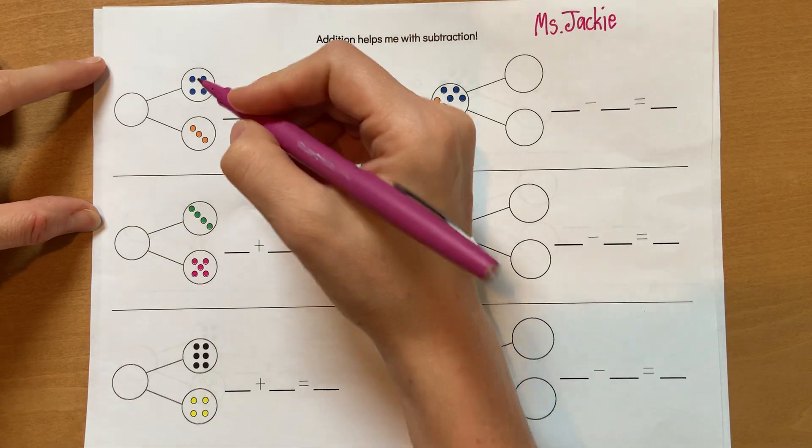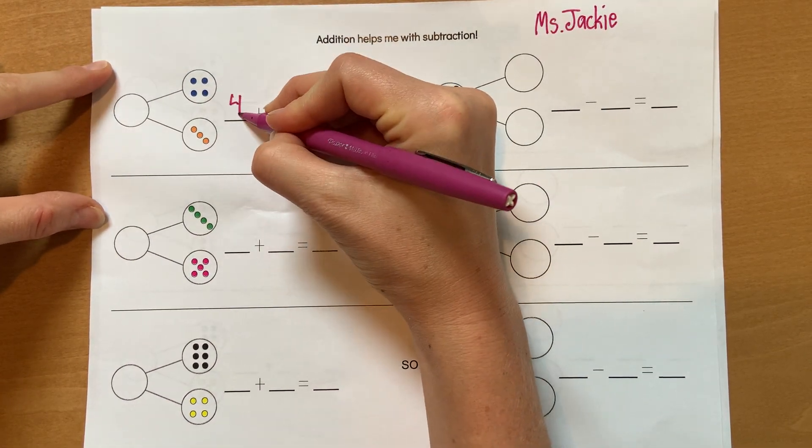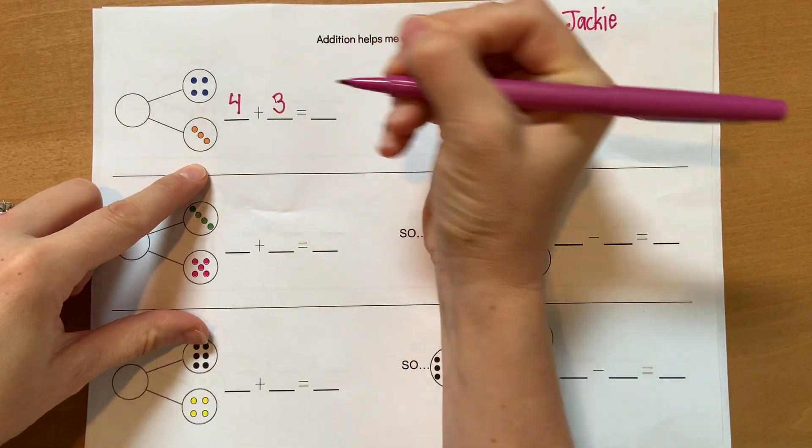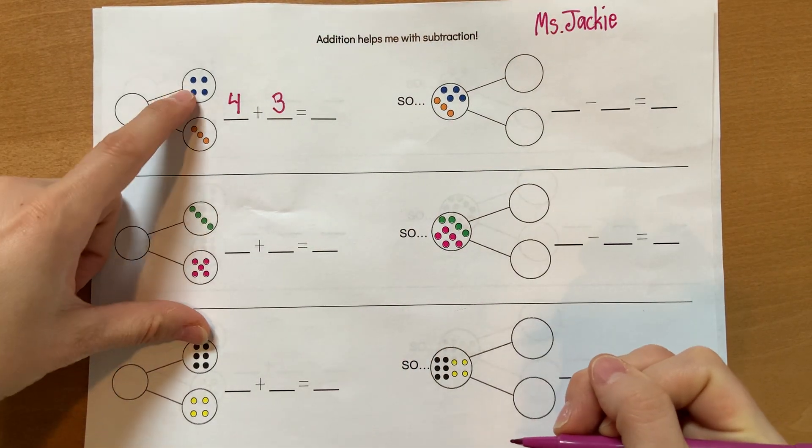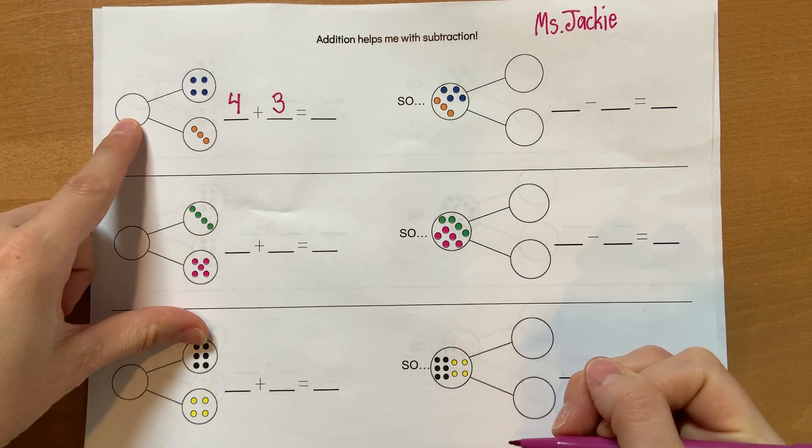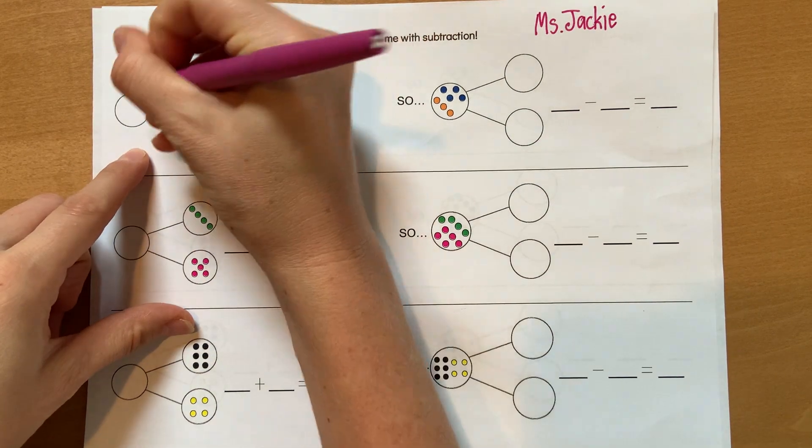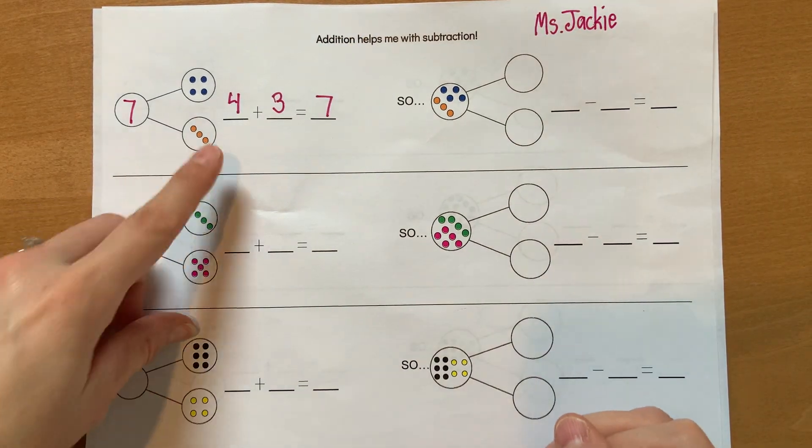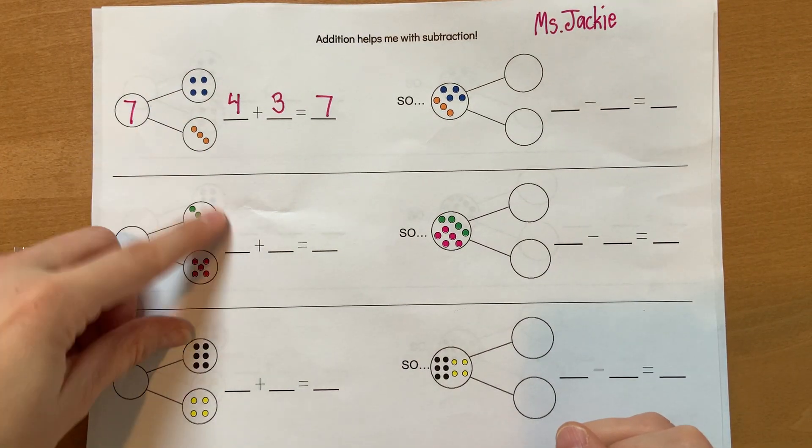So this part is four, and this part is three. I bet you know how to write those numbers. So four plus three equals seven. We know that. That's pretty easy. Four plus three makes seven.